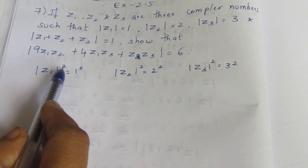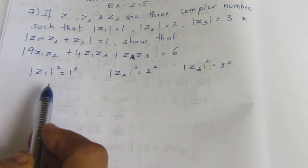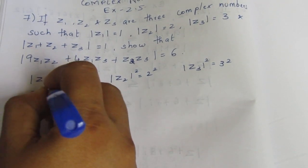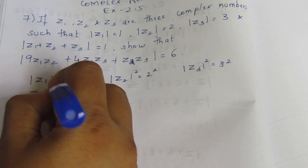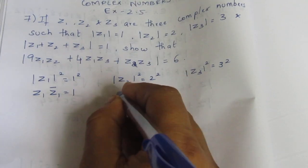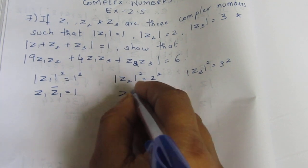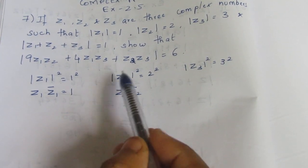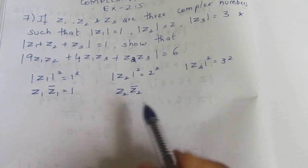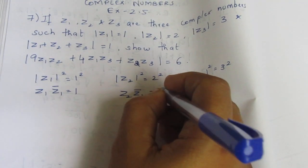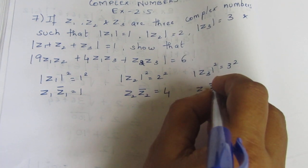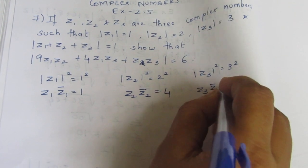Modulus Z3 squared equal to 3 squared. Modulus Z1 squared means this is Z1 into Z1 conjugate equal to 1. Z2 into Z2 conjugate - the modulus squared equals the number multiplied by its conjugate. Z3 into Z3 conjugate equal to 9.